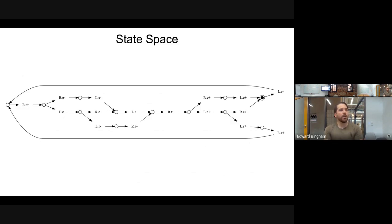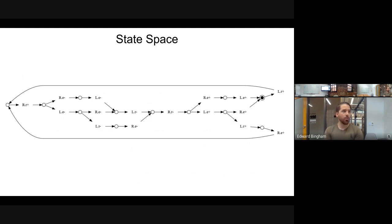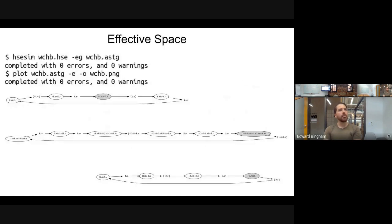Unfortunately hsc_sim has a couple of bugs when generating the state space sometimes — this one is correct but others may not be. Generally you don't want to use the full state space because you run into state space explosion. This Petri-net-based representation avoids that entirely.